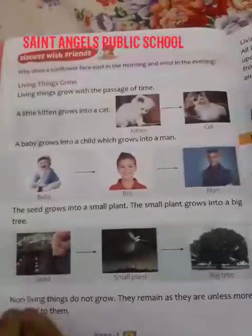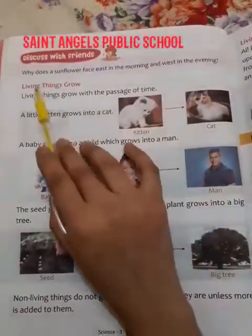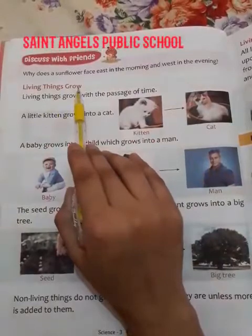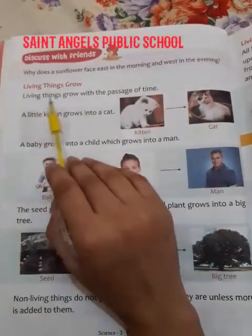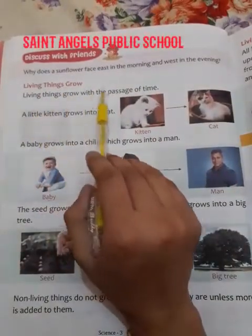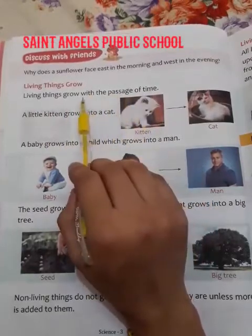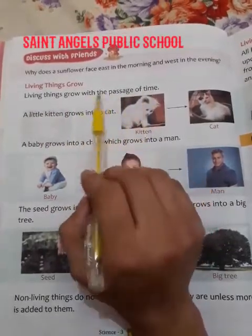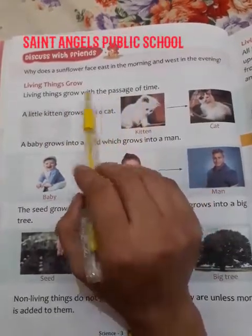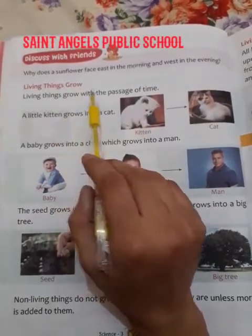Come to the next page — page number 6. Living things grow. Sajeevastwem badhti hai. Living things grow with the passage of time. With the passage of time means samay ke saath saath. Sajeevastwem samay ke saath saath badhti hai.